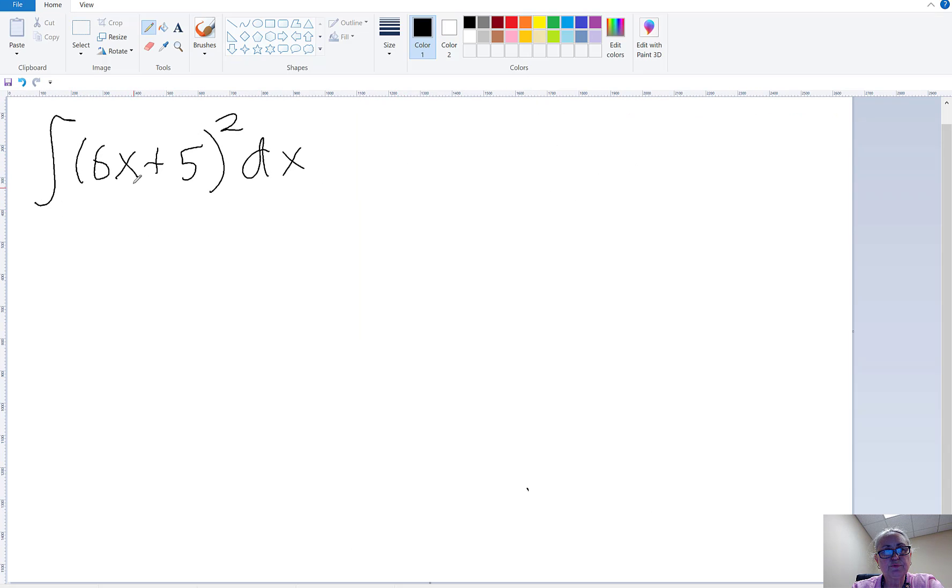Now, I can't separate this as 6x and 5 because this square belongs to the whole thing, and I would have to foil it out (6x + 5) times (6x + 5). That's fine for a second power, but if this is to the third power or fourth power, that's just not practical. So we're going to use u-substitution on this.